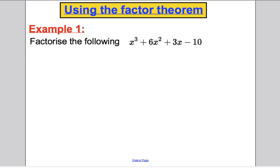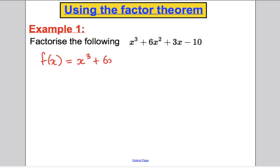I want to show a few better examples where the factor theorem is useful. In the previous example I did quadratics — we all know how to factorize quadratics — but let's use the factor theorem to factorize a cubic and show how helpful it can be. The question is: factorize the following. The first thing I always do is call the expression f of x. So f of x equals x cubed plus 6x squared plus 3x minus 10.